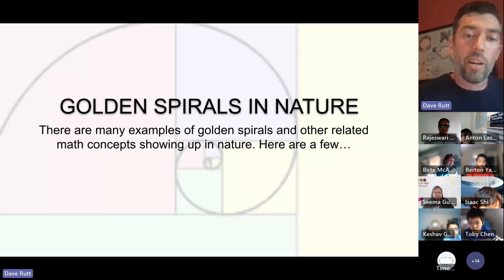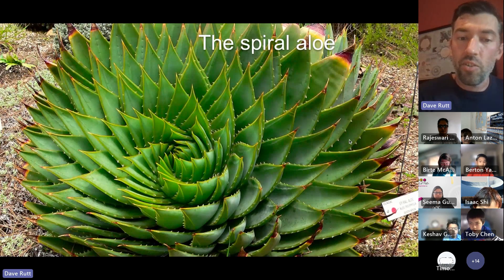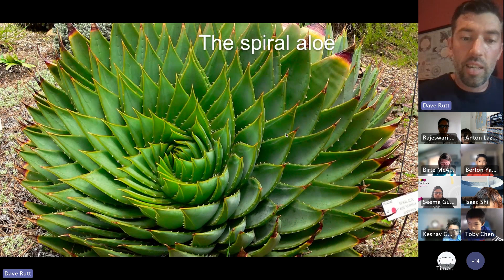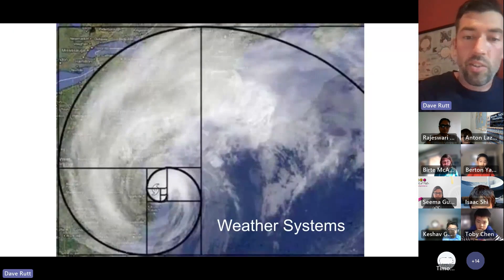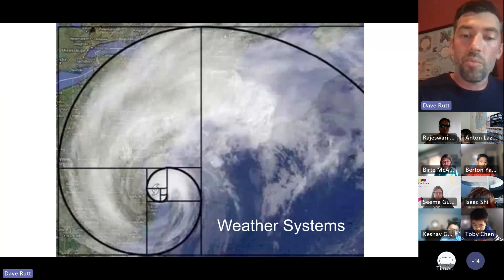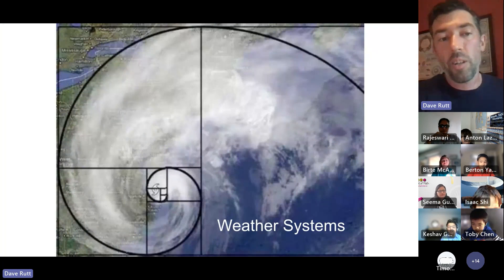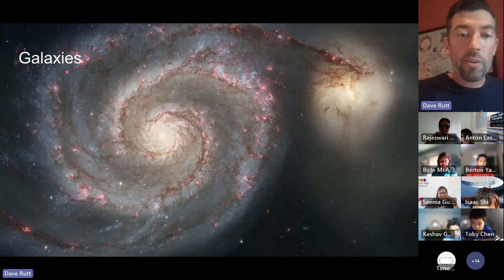So here are some examples of golden spirals in nature. This is a plant called the spiral aloe and you can see that it is - somebody already mentioned a snail shell. And there you go. Weather systems. If you look at certain kinds of storms, you will see that they form into spiral shapes. Now, our galaxy is a spiral galaxy.